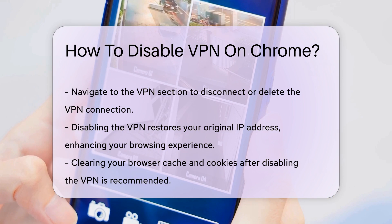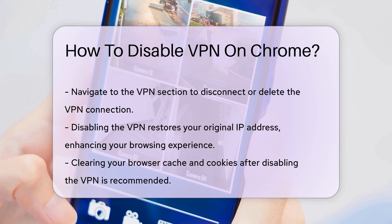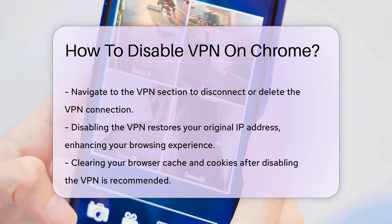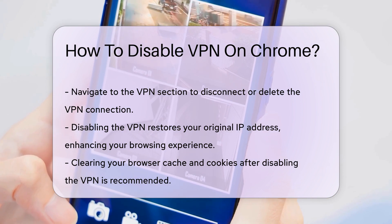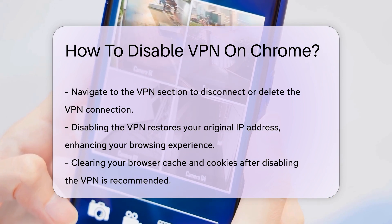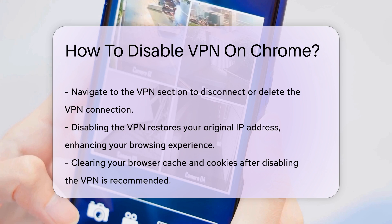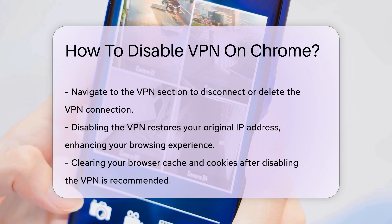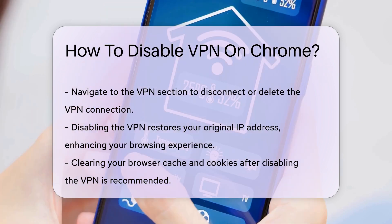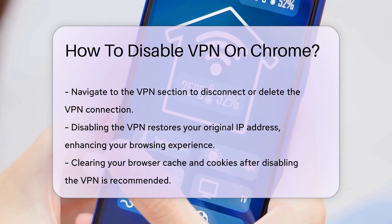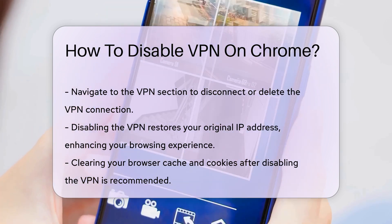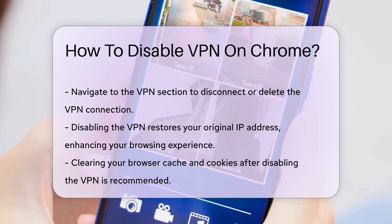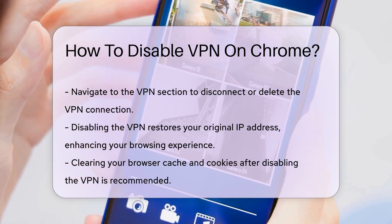In cases where the VPN is configured through system settings, access your device's network settings. Locate the VPN section and select the option to disconnect or delete the VPN connection. This step ensures that the VPN is no longer active on your network.